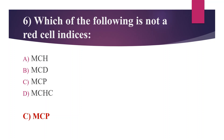MCP stands for monocyte chemoattractant protein, which is one of the chemokines that regulates migration and infiltration of monocytes or macrophages. MCH is mean corpuscular hemoglobin. MCHC is mean corpuscular hemoglobin concentration. MCD is mean corpuscular diameter, an old measure used to register the morphological properties of erythrocytes. So the answer is Option C, MCP.